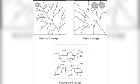The first pattern is the dendritic drainage pattern. This is similar to the cells you have studied in biology — it would branch and rebranch again. The same pattern is formed on the surface of the earth as well.